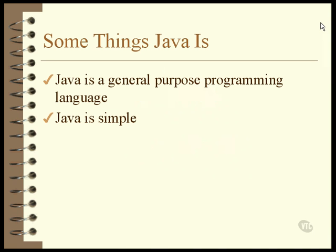for example, you know that one number is being subtracted from another. There are only a very few fundamental data types and very few Java keywords to manipulate them. Java programs are generally simple in the sense that they are written as a collection of small methods. A method is a named collection of executable commands.